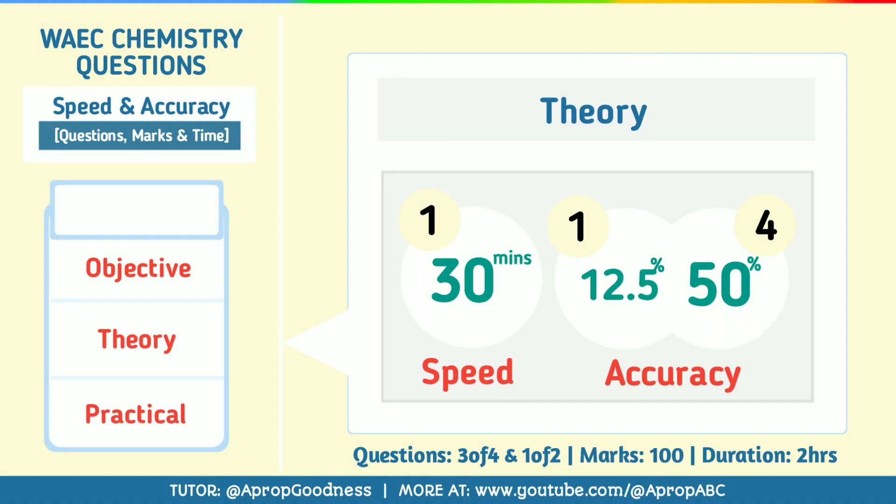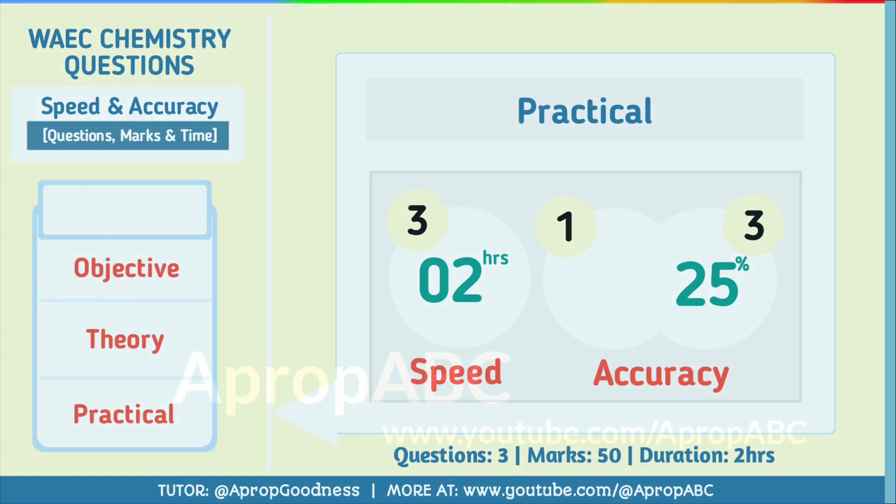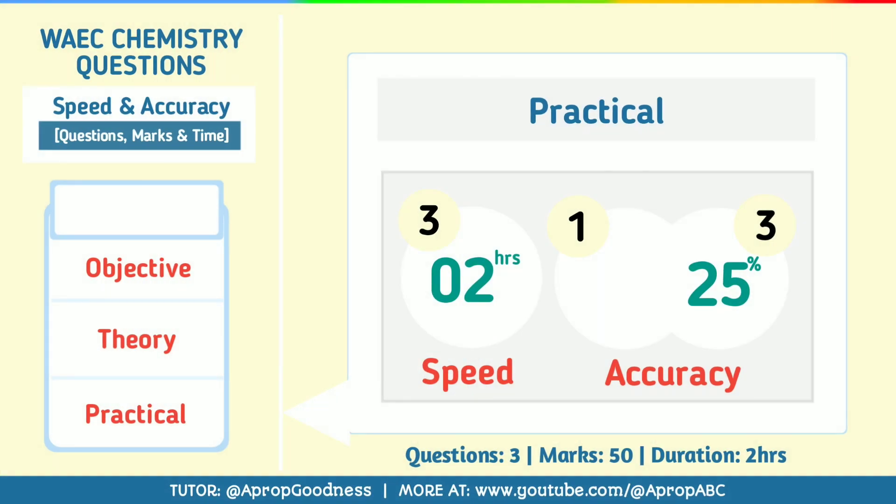For theory, you must be as fast as 30 minutes per question because you have 4 questions, so that's 2 hours. On accuracy, if you get a question correctly, that means you have 12.5% of your total grade. On the practical aspect, you will have 3 questions that will cover 25 marks.